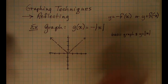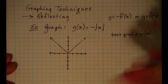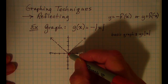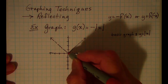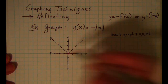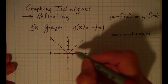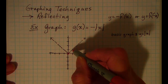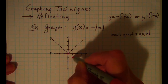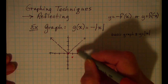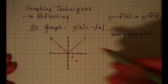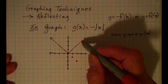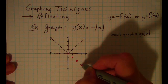For my g(x) function, I want to negate my y values. When x is zero, my y value is zero — zero doesn't have a negative, so my y value is still zero. When x is one, my y value is one, but I want the negative of that. When x is two, my y value is two, but I want the negative of that, which is down at negative two. When x is three, my y value is positive three on the basic function, but I want the negative of that.